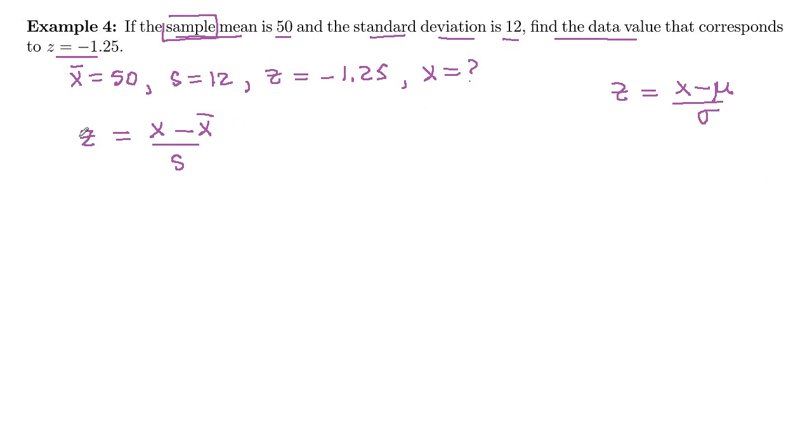So let's plug in what we know. The z-score on the left, negative 1.25. Our x-value, that's what we want. x-bar is 50. And then s, the standard deviation, 12.